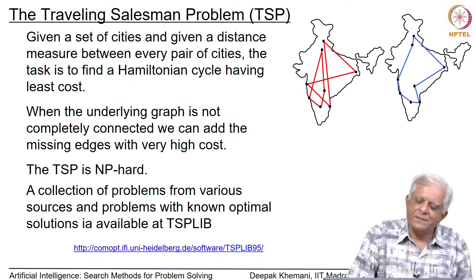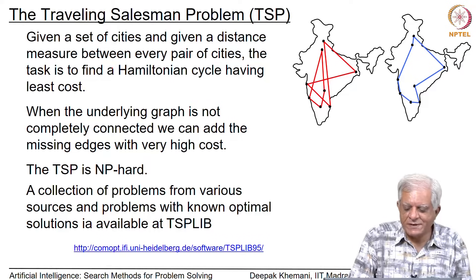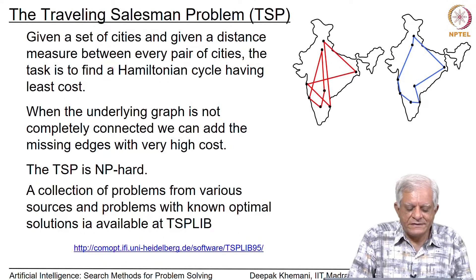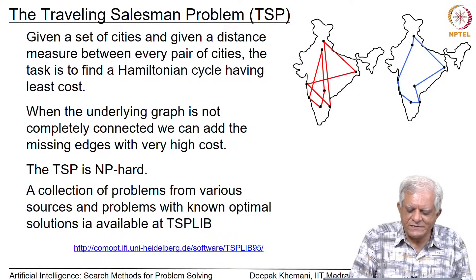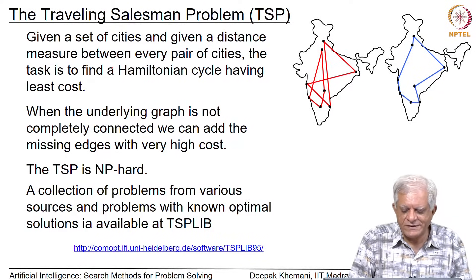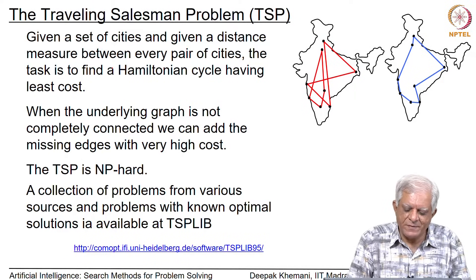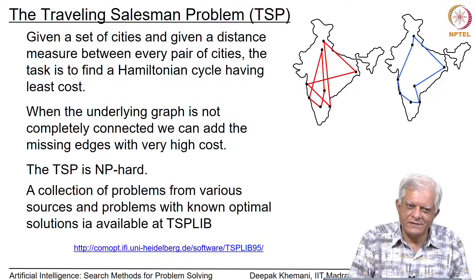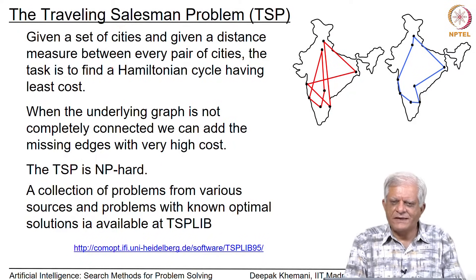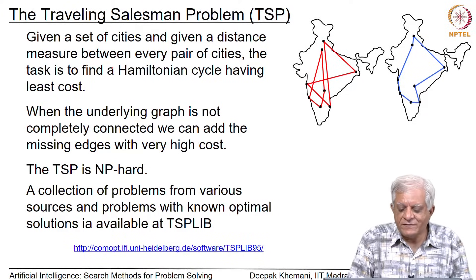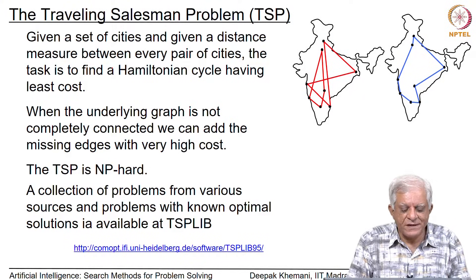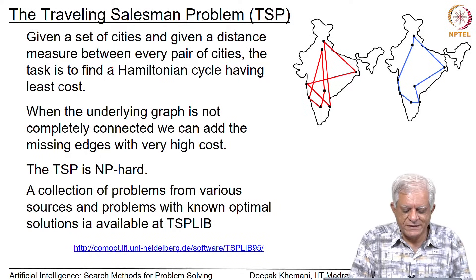Let us look at the traveling salesman problem. Given a set of cities and a distance measure between every pair of cities, the task is to find a Hamiltonian cycle having the least cost. A Hamiltonian cycle means you start from some city, visit every other city exactly once, and then come back to the original city.